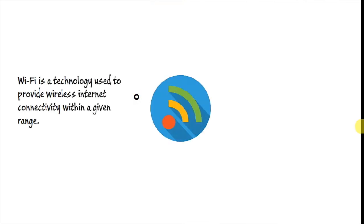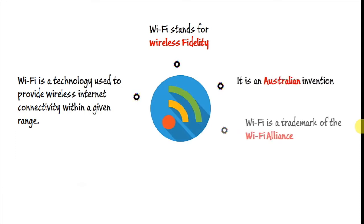Wi-Fi is a technology used to provide wireless internet connectivity within a given range. Wi-Fi stands for wireless fidelity. It is an Australian invention and Wi-Fi is a trademark of the Wi-Fi Alliance. It was introduced in September 1998 and it works on 2.5 to 5.8 Gigahertz.